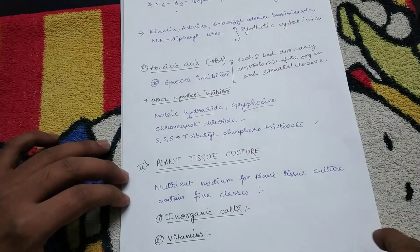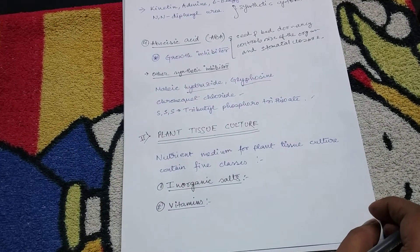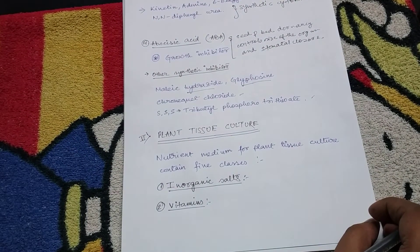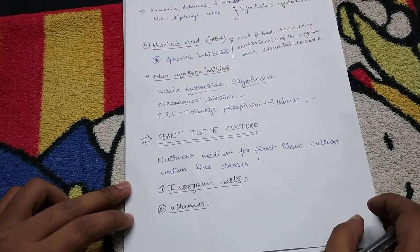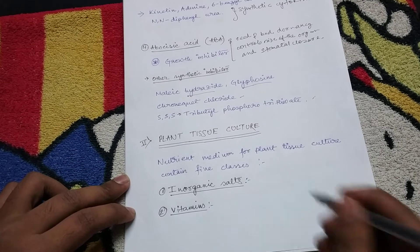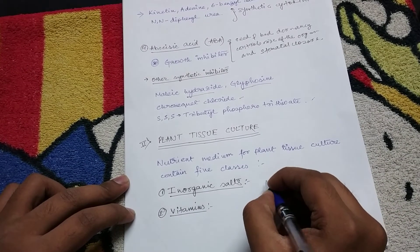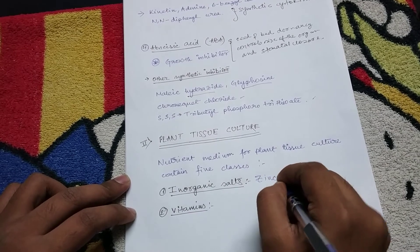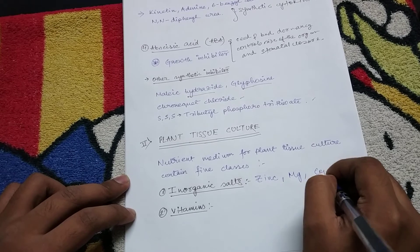Now the next part is plant tissue culture. In this part we will discuss the nutrient medium for plant tissue culture which contains five classes. First of all, inorganic salts which are required are zinc, magnesium, and copper.